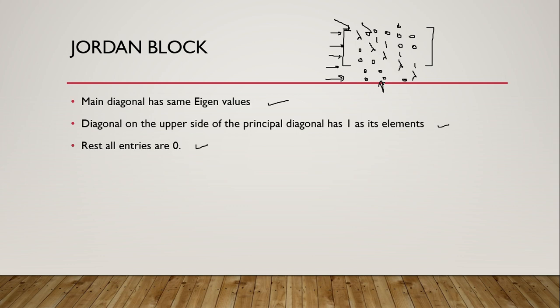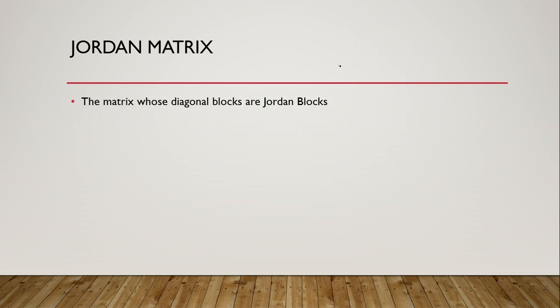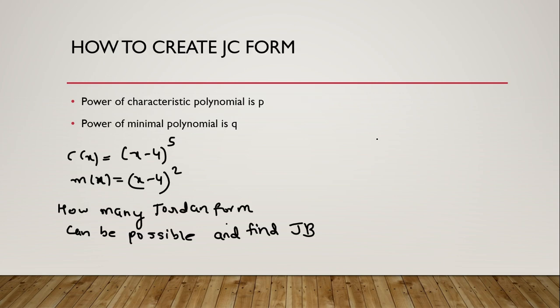Now how do we solve it? We need to first find out the Jordan block, and the matrix which will have Jordan blocks as its principal diagonal will be the Jordan matrix. To find it, we use the characteristic polynomial and the minimal polynomial.